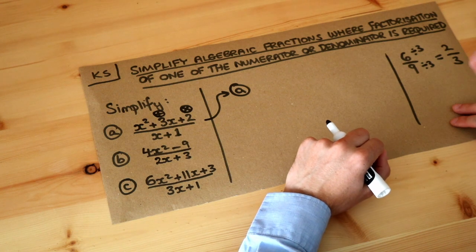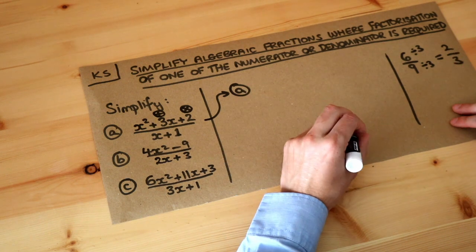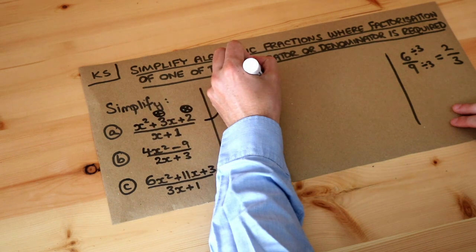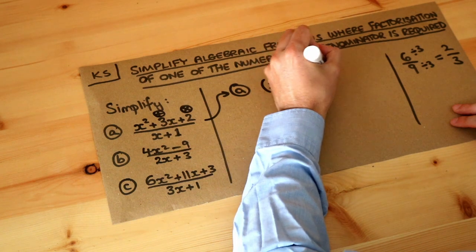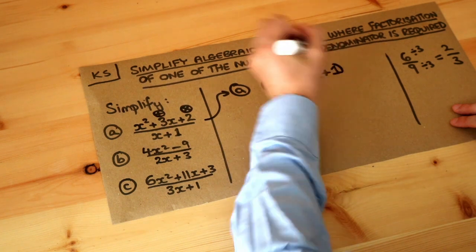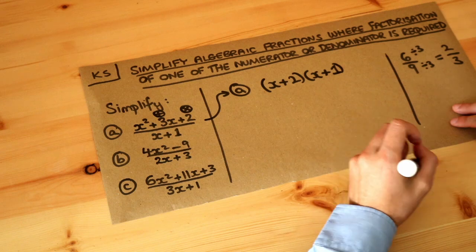Now what numbers add to give 3 and times to give 2? Well, 2 and 1. And you remember that we can therefore factorize this quadratic as x plus 2 and x plus 1 using those two numbers, and if you don't know how to do that please look at my video on quadratic factorization first.